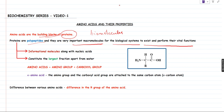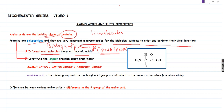Proteins, as you all know, they are also called informational molecules along with nucleic acids. Nucleic acids like DNA or RNA are called information molecules because they are responsible for carrying information from one generation to another. This is known as heredity. But proteins are also called information molecules because they mainly perform critical functions in various biological pathways in the form of enzymes. And they constitute the largest fraction apart from water inside a cell.